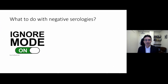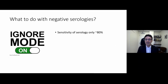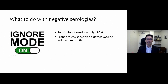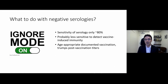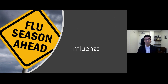Patients sometimes come in asking for serologies that come back negative. What do we do with negative serologies? The answer is generally to ignore them. The sensitivity of the serology is only about 80%, and that number may be lower for vaccine-induced immunity — antibody titers boost higher with natural disease than with vaccination. If you have age-appropriate vaccination documentation — one dose for most people, two doses for the three groups listed — that supersedes post-vaccination titers. If I've had two vaccines and my titer is negative, I do not need a booster; my antibodies will boost in response to being exposed to the virus.